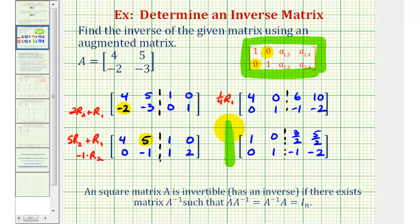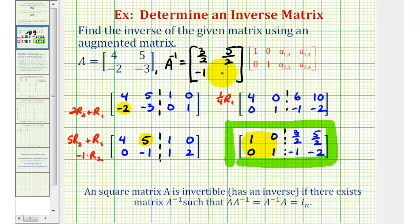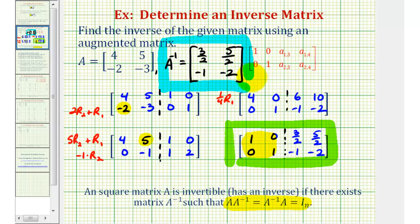Now on the left side of the augmented matrix we have the identity matrix, which means the right side is A inverse — the inverse of the original matrix. So the first row is three-halves, five-halves and the second row is negative one, negative two. Since this is the inverse of matrix A, we have that A times A inverse equals A inverse times A, which equals the two-by-two identity matrix. I hope you found this explanation helpful.